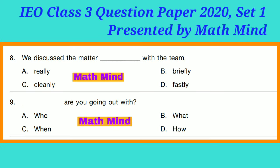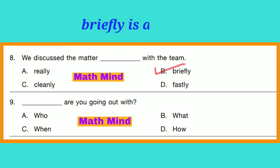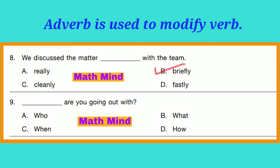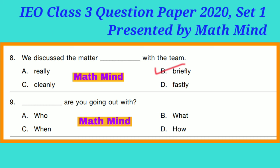Question 8: 'We discussed the matter dash with the team.' Option B is correct: 'briefly.' Briefly is an adverb. An adverb is used to modify a verb — it explains how the matter was discussed. 'Briefly' is used for the verb 'discuss.'